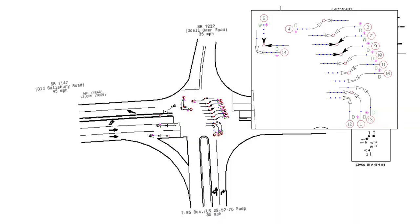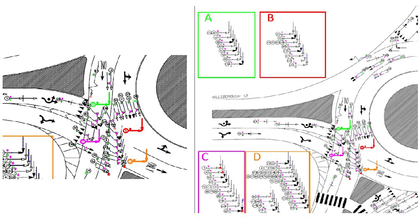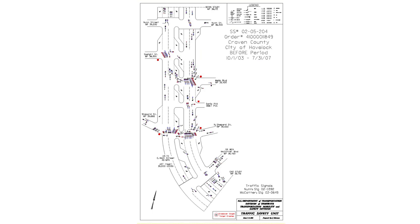Crash analysis is a visualization of crash data along a relevant segment or intersection by use of a collision diagram. A collision diagram is a drawing that represents the type of crash, severity, speed, direction, light condition, and road condition for each crash reported. These are based on the initial accident, not the subsequent accidents that occur.